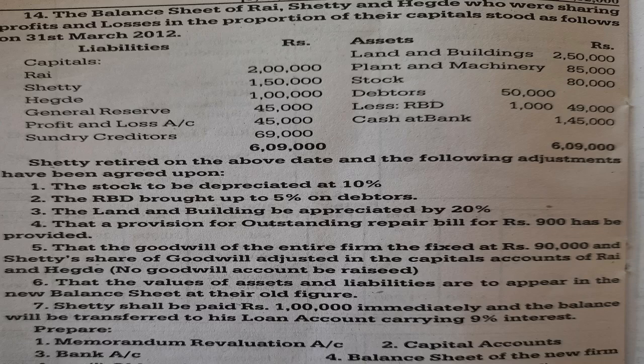Hello students. Let's move on to the internal problem. The balance sheet of Rai, Shetty, and Egde, who were sharing profits and losses in the proportion of their capital, stood as follows. On 31st March 2012, their balance sheet was prepared. Then Shetty retired on the above date, and the following adjustments were agreed upon.